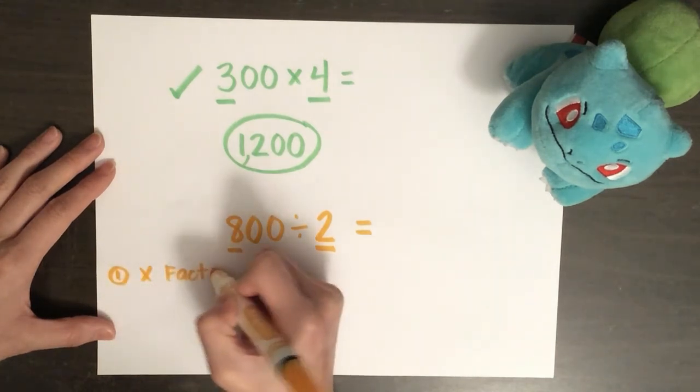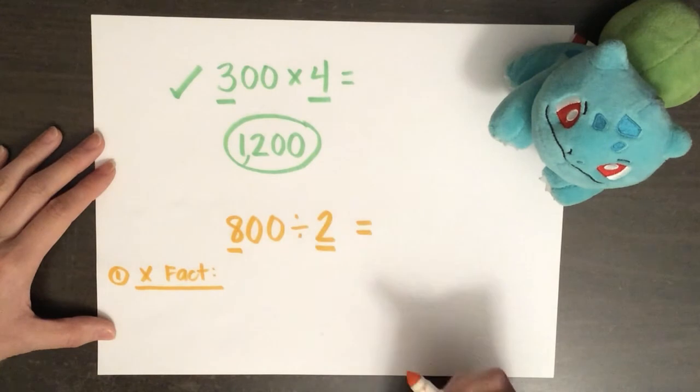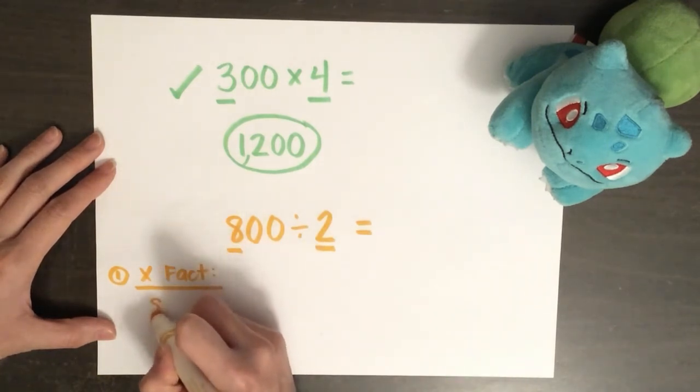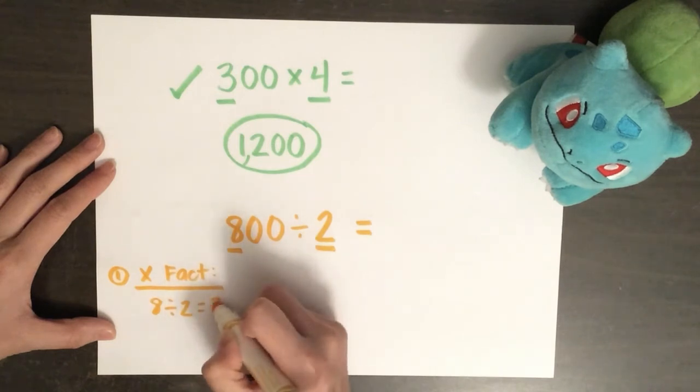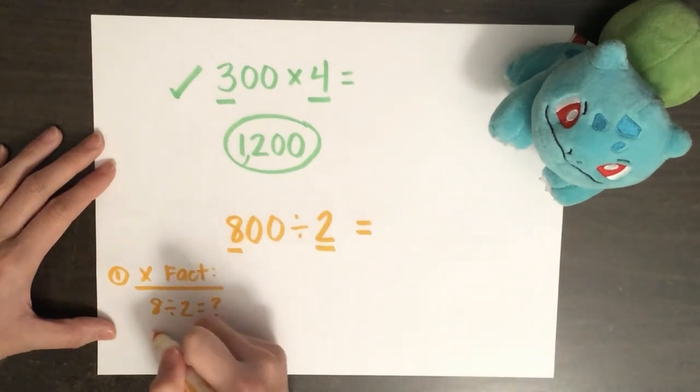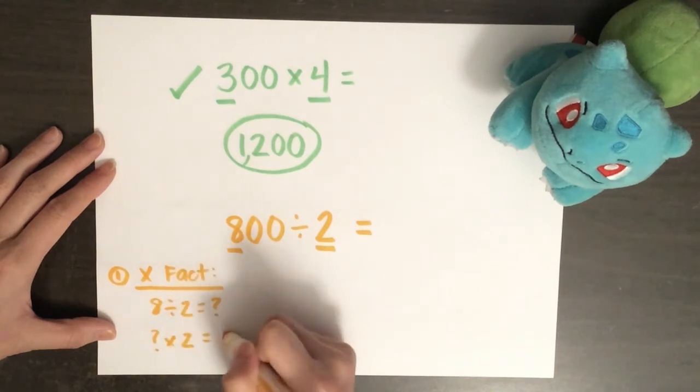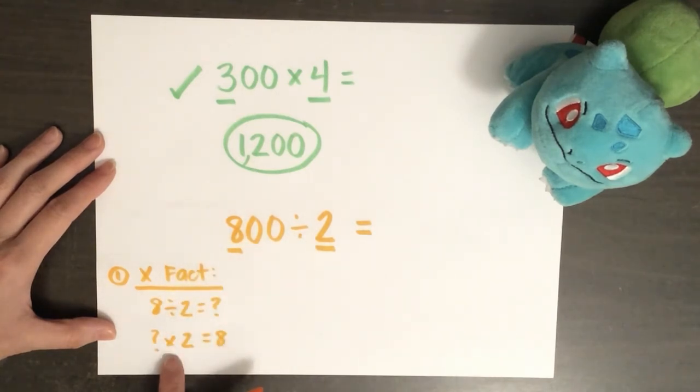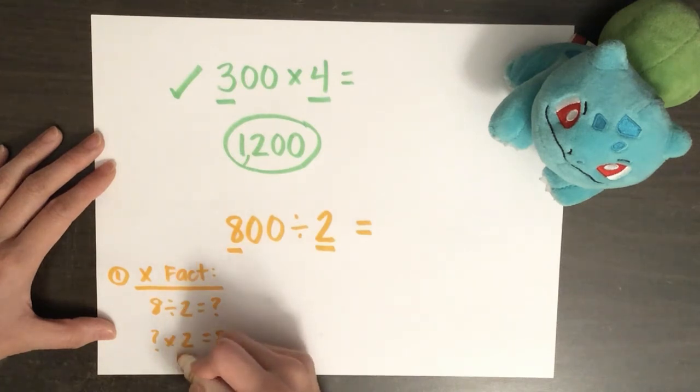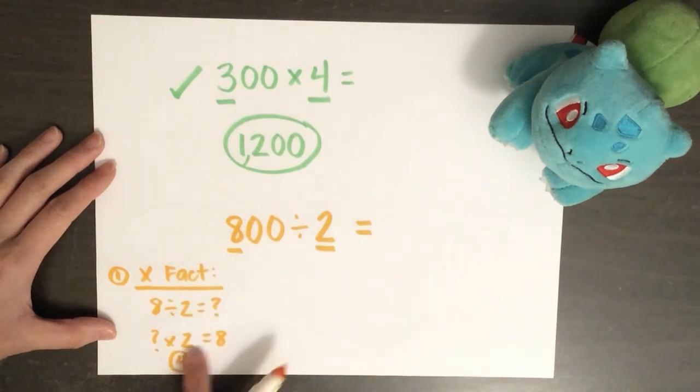For a multiplication fact, I can think to myself, well, if eight divided by two equals something, then something times two must equal eight. Alright. One times two, I know is two. That doesn't work. Two times two is four. That still doesn't work. Three times two? Nope. It equals six. How about four times two? Yes. Four times two is eight. So, my quotient for eight divided by two must be four.